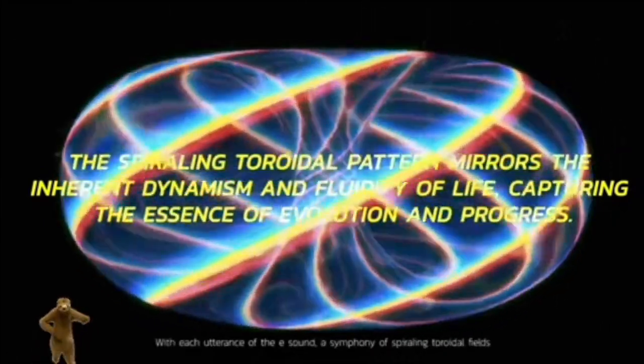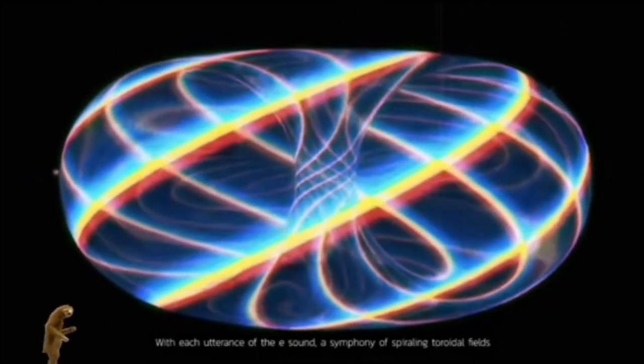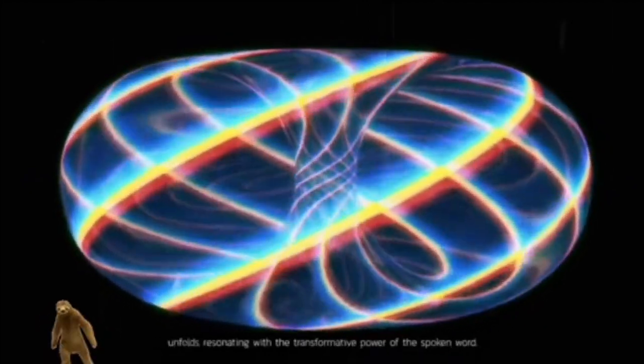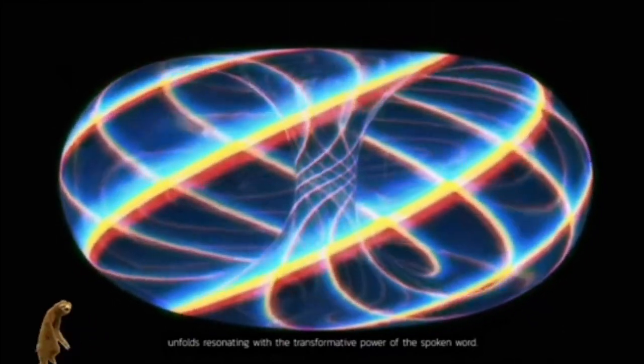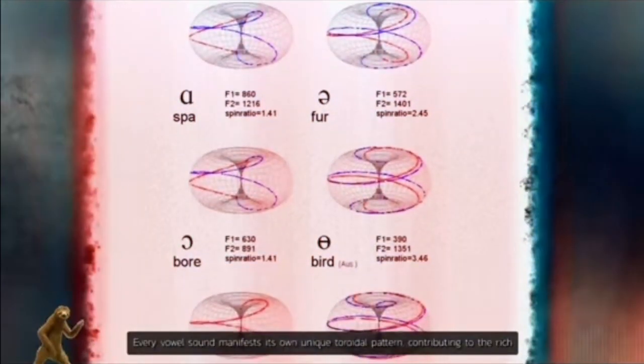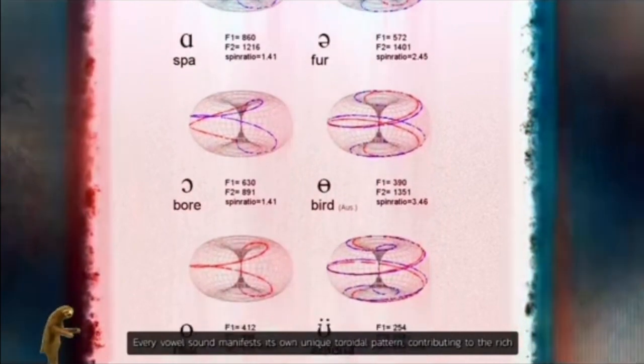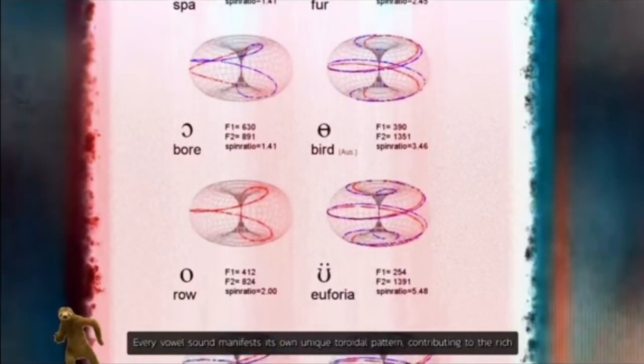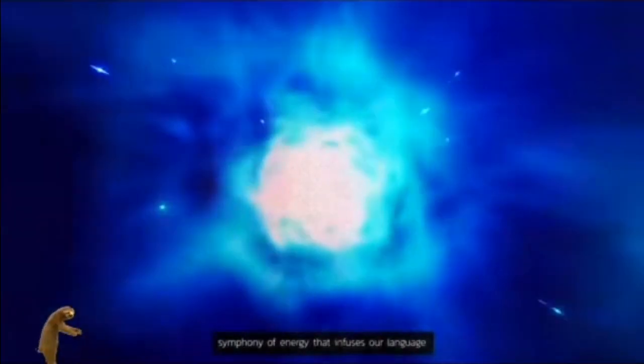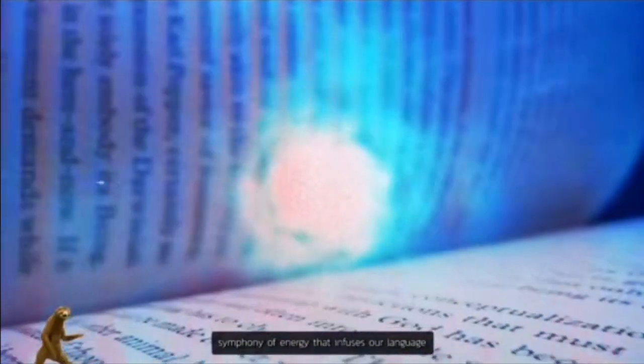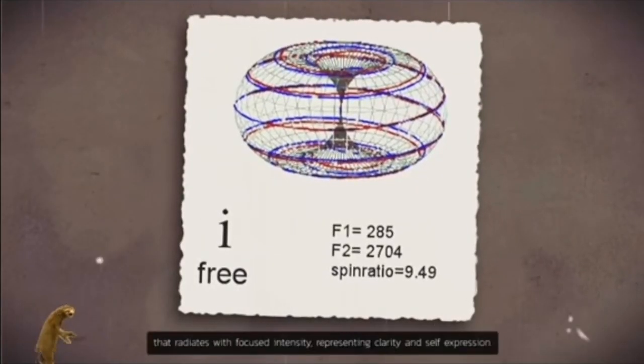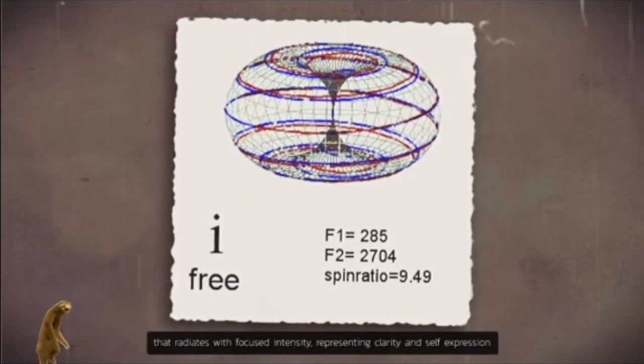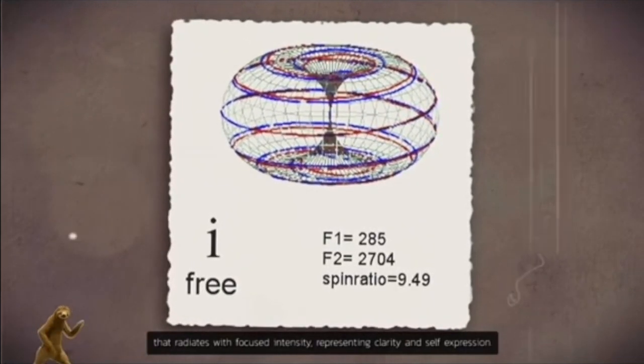With each utterance of the E sound, a symphony of spiraling toroidal fields unfolds, resonating with the transformative power of the spoken word. Every vowel sound manifests its own unique toroidal pattern, contributing to the rich symphony of energy that infuses our language. The vowel I generates a toroidal field that radiates with focused intensity, representing clarity and self-expression.